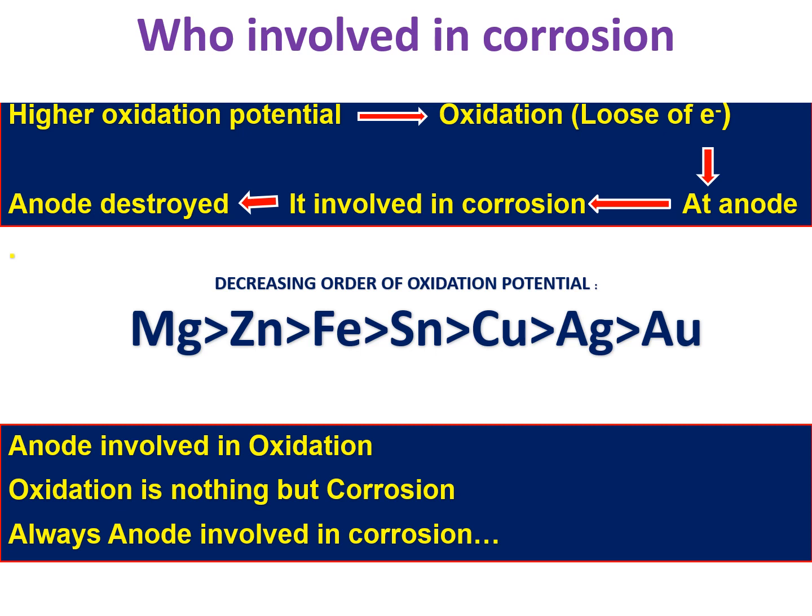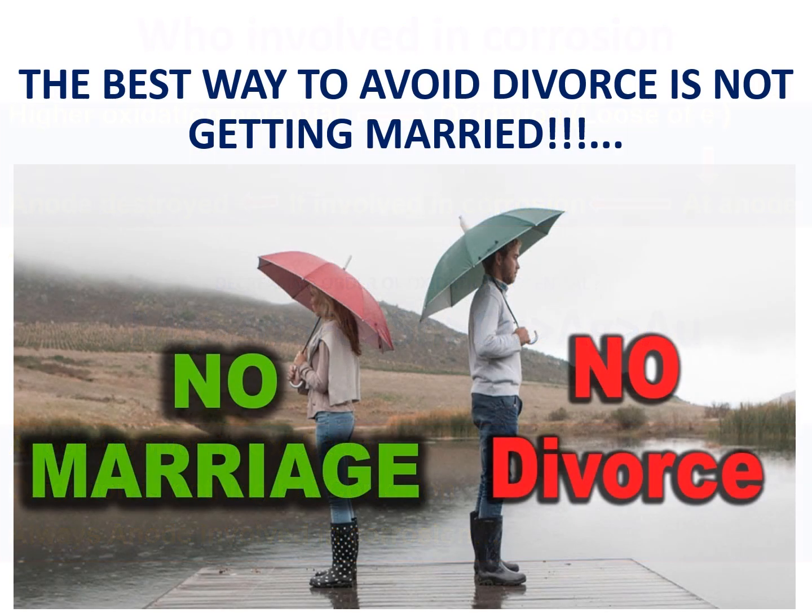A metal having lower oxidation potential means it has a higher reduction potential, because oxidation potential equals minus reduction potential. So if a metal has a higher oxidation potential, that same metal has a lower reduction potential. At the anode, oxidation takes place — oxidation is nothing but corrosion. So whoever is involved in oxidation is involved in corrosion; anodes are always involved in corrosion.